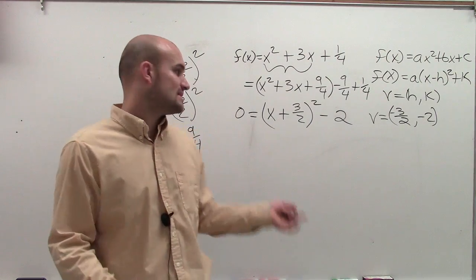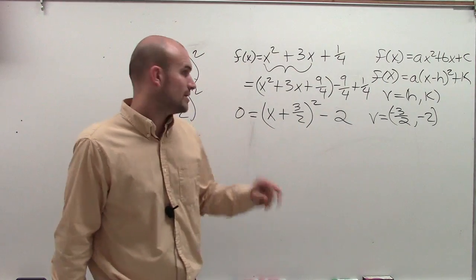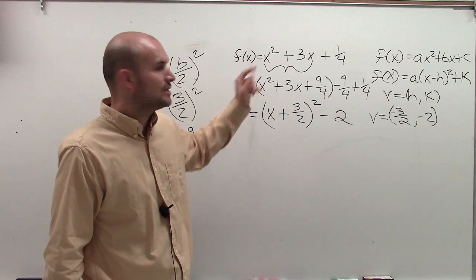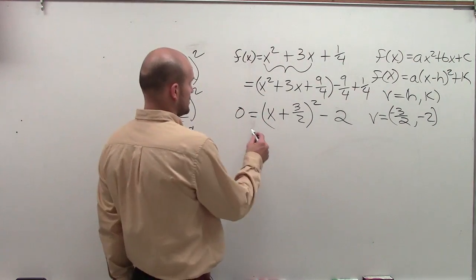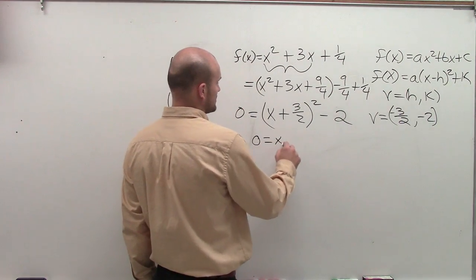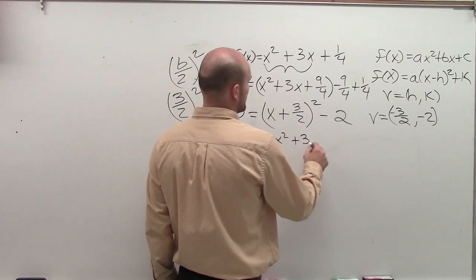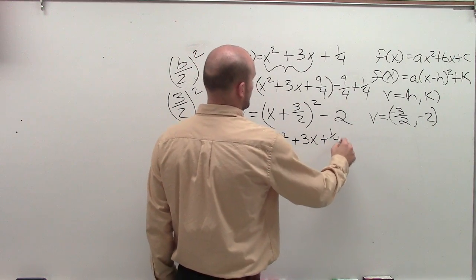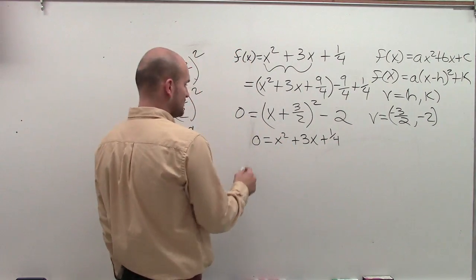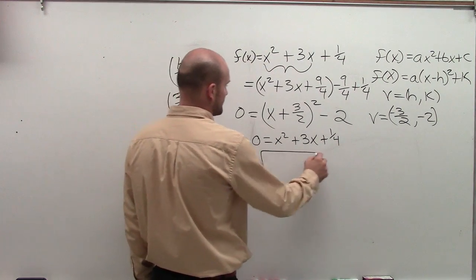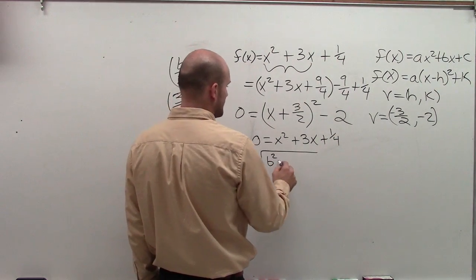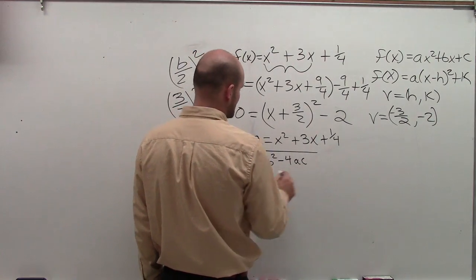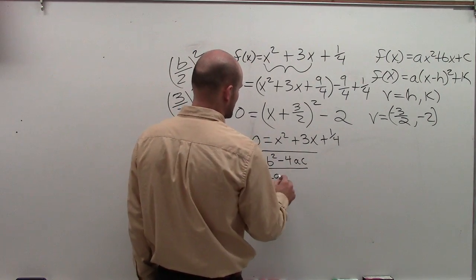But I want to show you another step. You don't always have to solve with the rest of completing the square. You can also take a look by using the quadratic formula. So I could say 0 equals x squared plus 3x plus 1 fourth. So then to use the quadratic formula, I'll do opposite of b, plus or minus b squared minus 4 times a times c, all over 2a.